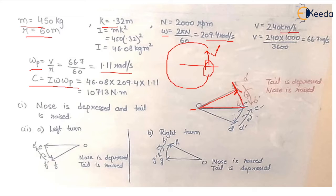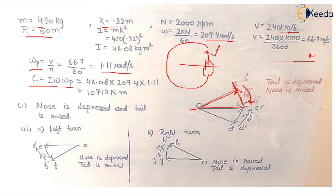The reaction couple is equal and opposite, shown by vector A'B'. Applying the right-hand screw rule — curling the fingers in the direction of that vector — the sense of the reactive couple comes out to be anti-clockwise. In the side view, with the nose at one end and the tail at the other, an anti-clockwise reactive couple means the nose is raised and the tail is dipped.